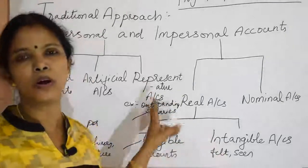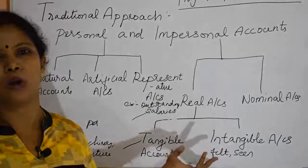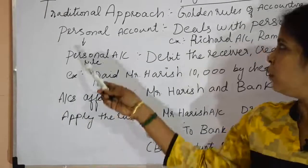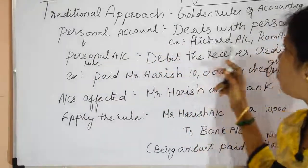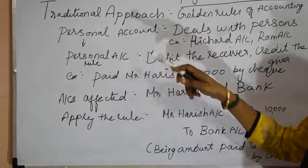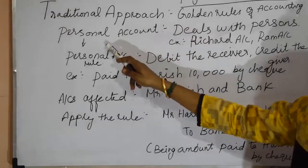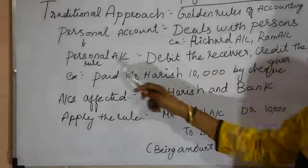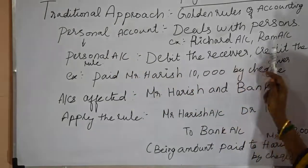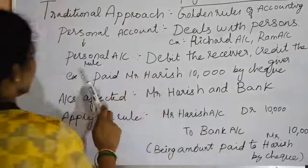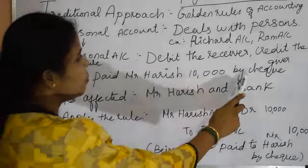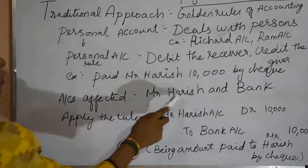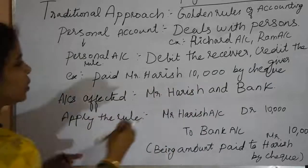Now we are going to see the golden rules of accounting and how to transfer entries into the accounts. The personal account rule is: debit the receiver, credit the giver. Personal account deals with persons — for example, Richard's account, Ram's account. Let's see an example: paid Mr. Harish 10,000 by cheque. The accounts affected are Mr. Harish's account and the bank account.